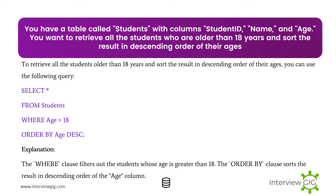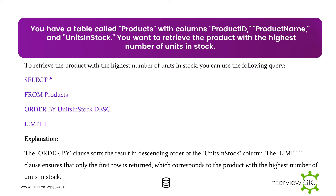Next Scenario: You have a table called Students with columns Student ID, Name, and Age. You want to retrieve all students who are older than 18 years and sort the result in descending order of their ages. To do this, you can use the following query. The WHERE clause filters out students whose age is greater than 18, and the ORDER BY clause sorts the result in descending order of the age column.